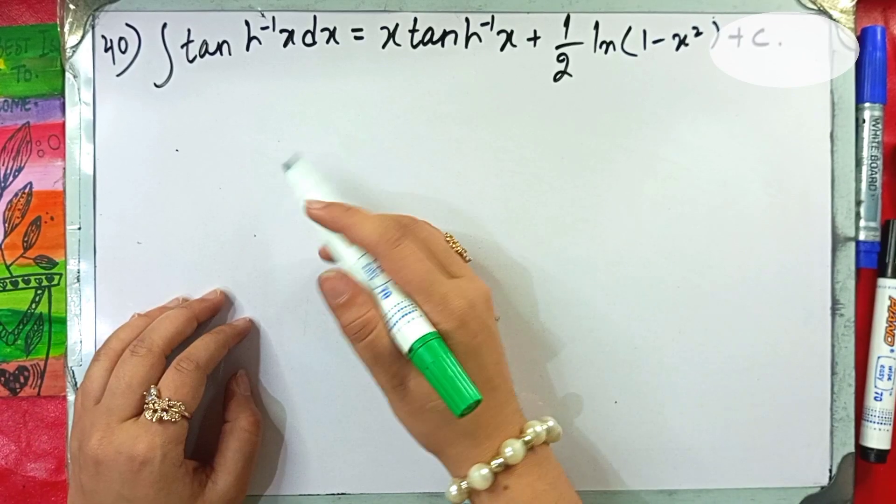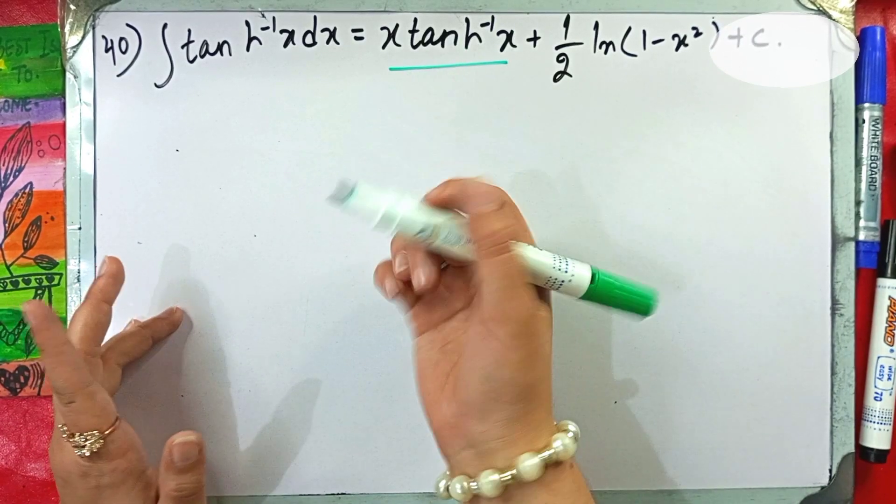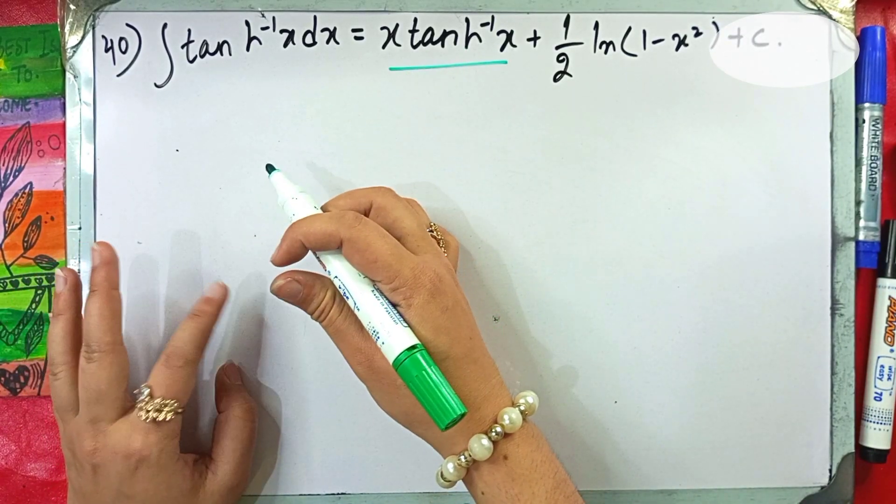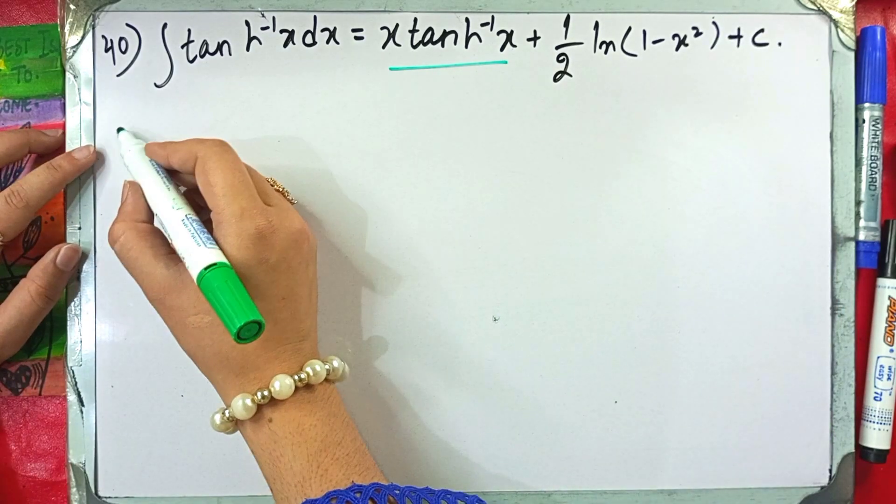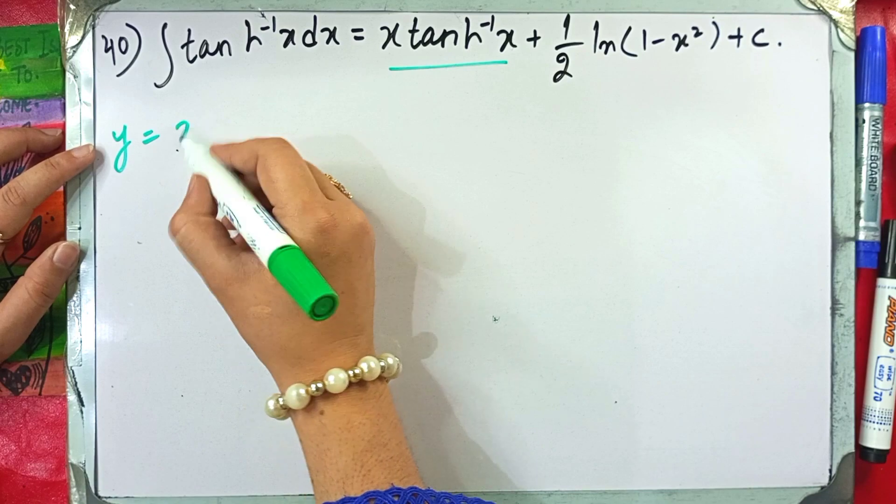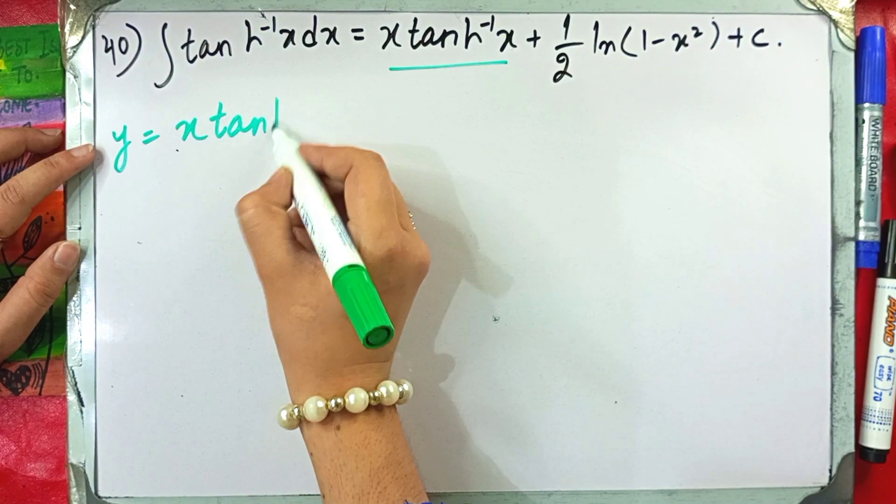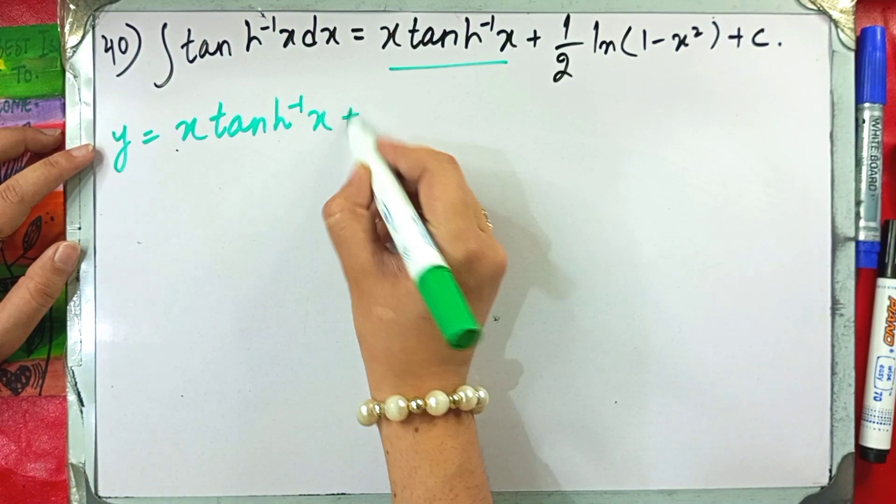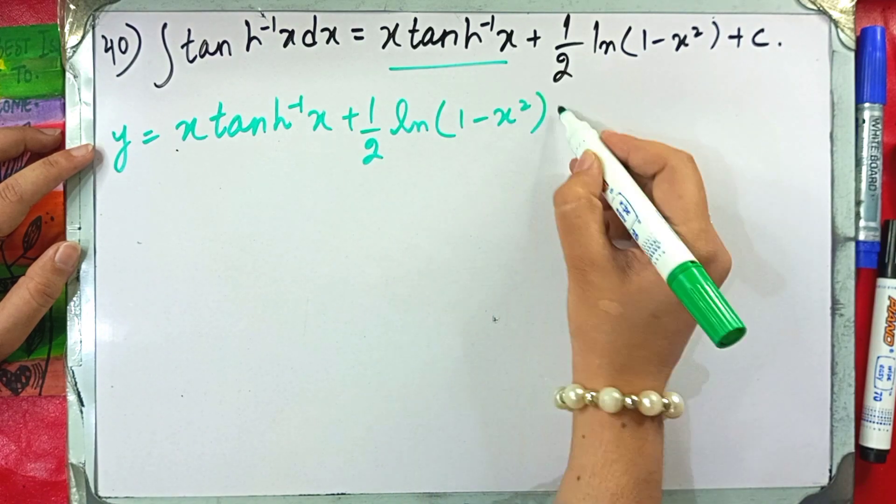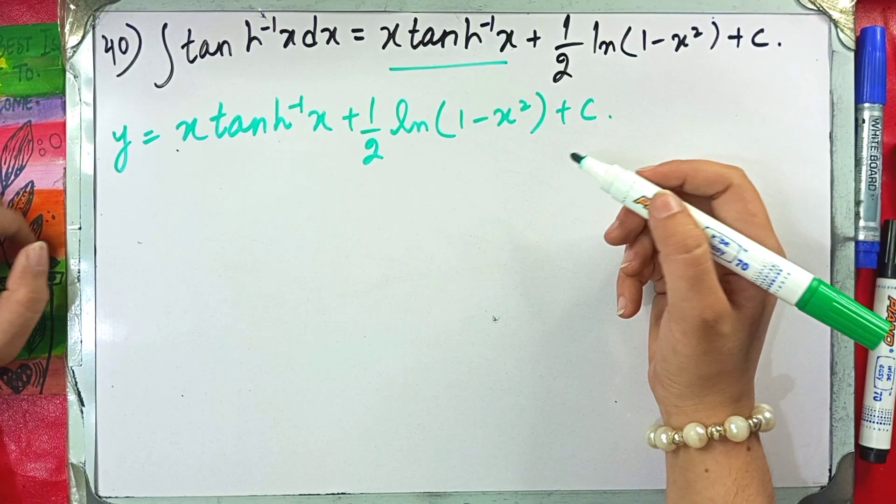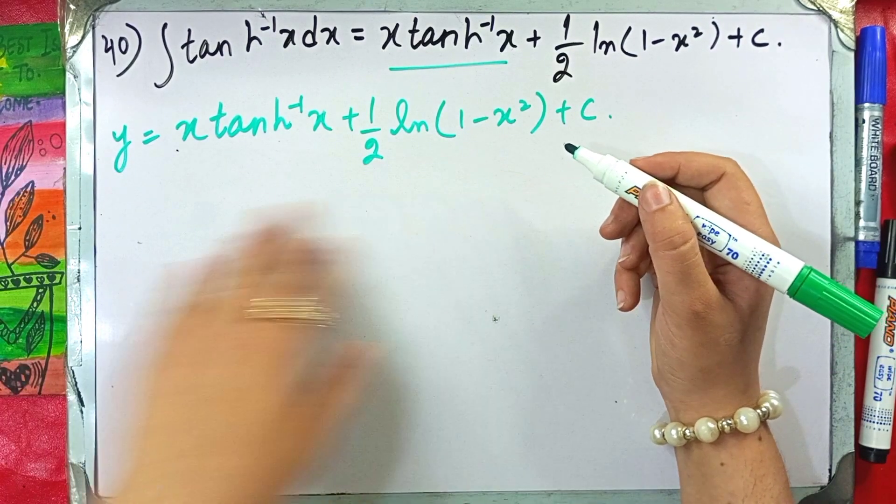So question number 40, we are also doing verification here and this is the last question of verification, so good. This is y equals x tan hyperbolic inverse of x plus one half natural log of 1 minus x squared plus constant c. Our function has come.